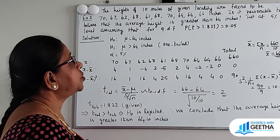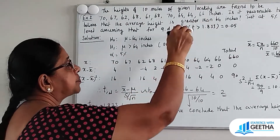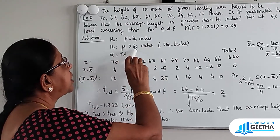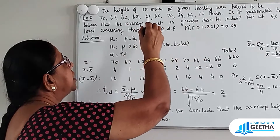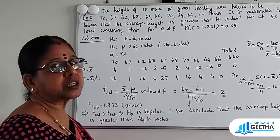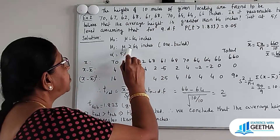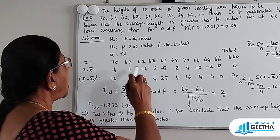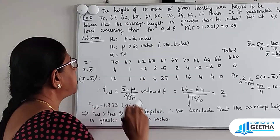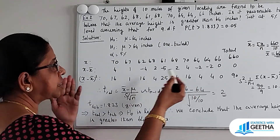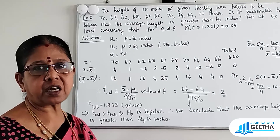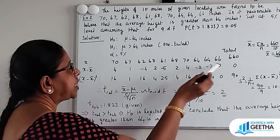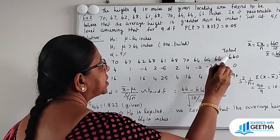H0: mu equal to 64 inches. Alternative hypothesis H1: mu greater than 64 inches — that is one-tailed alternative. Alpha equals 5%. We have to calculate x-bar. X-bar equals summation x by n.